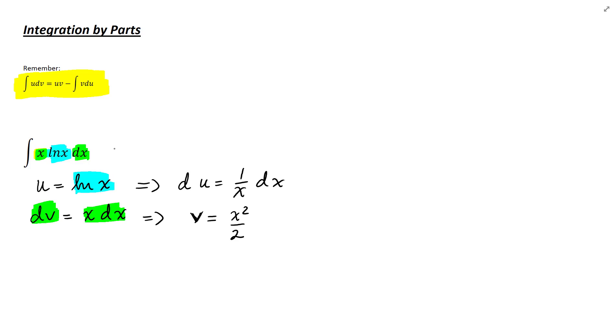Knowing this and knowing the formula, now we have to write uv. In our case uv is x squared over 2 ln x minus, following the formula, integral of v dv, which is x squared over 2, times du, which is 1 over x dx.